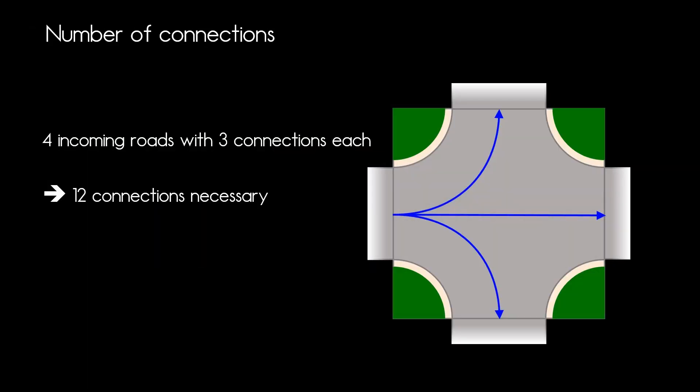In our example we have 4 incoming roads in our junction. From every incoming road we have 3 choices to either go left, right or straight. If we multiply that to all the incoming roads this makes 12 connections within that junction and 4 incoming roads. This adds up to our 16 roads we defined at the very beginning.